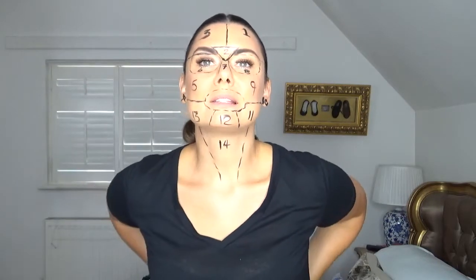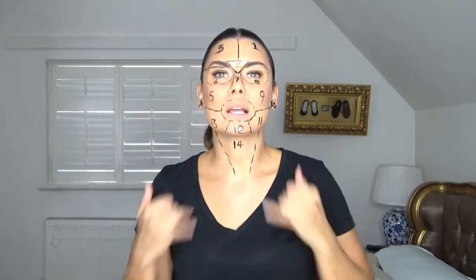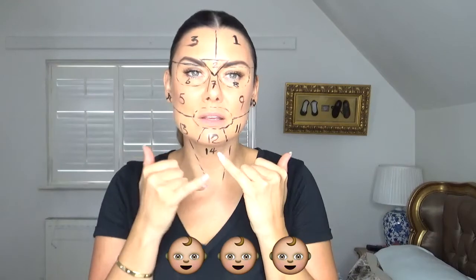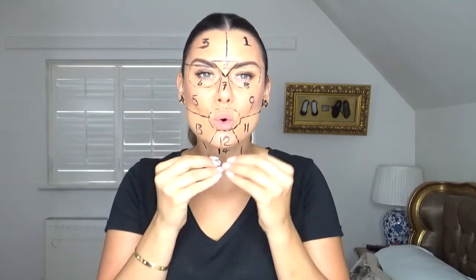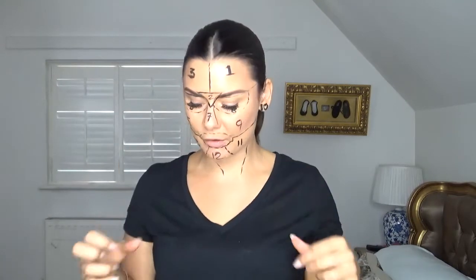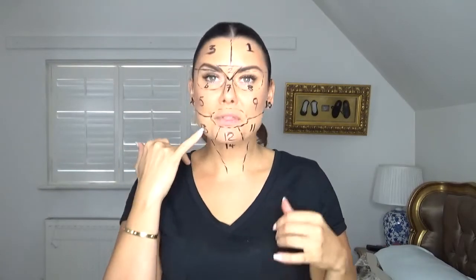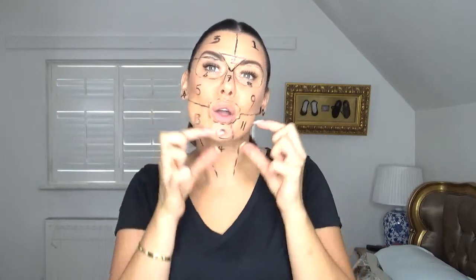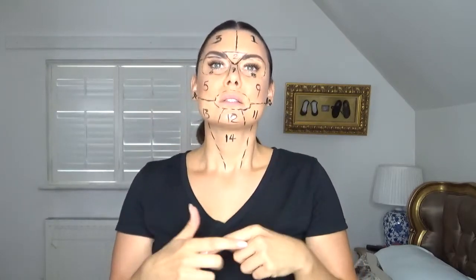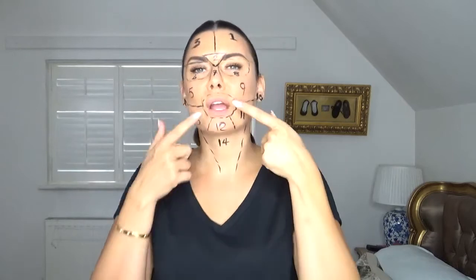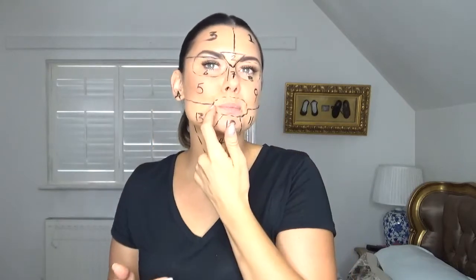All around the lower jawline and across the chin — zone 12 — is your reproductive system, so it's all hormonal around this area. Zones 13 and 11 are your ovaries.